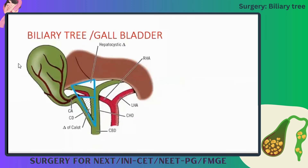Gastrinoma — in the triangle of Pasaro you will find gastrinoma and insulinoma. One important point regarding insulinoma: the patient will have high levels of insulin secretion due to the tumor. This will lead to repeated episodes of hypoglycemia.